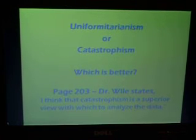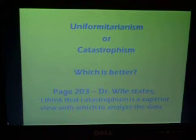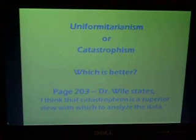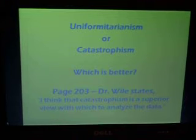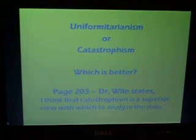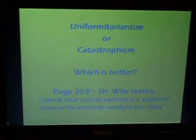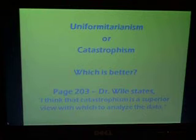This is the second part of the second lecture of Module 8 in the Apologia General Science book. We're going to continue by looking at both theories of uniformitarianism and catastrophism and asking the question: which of these theories fits the data better?